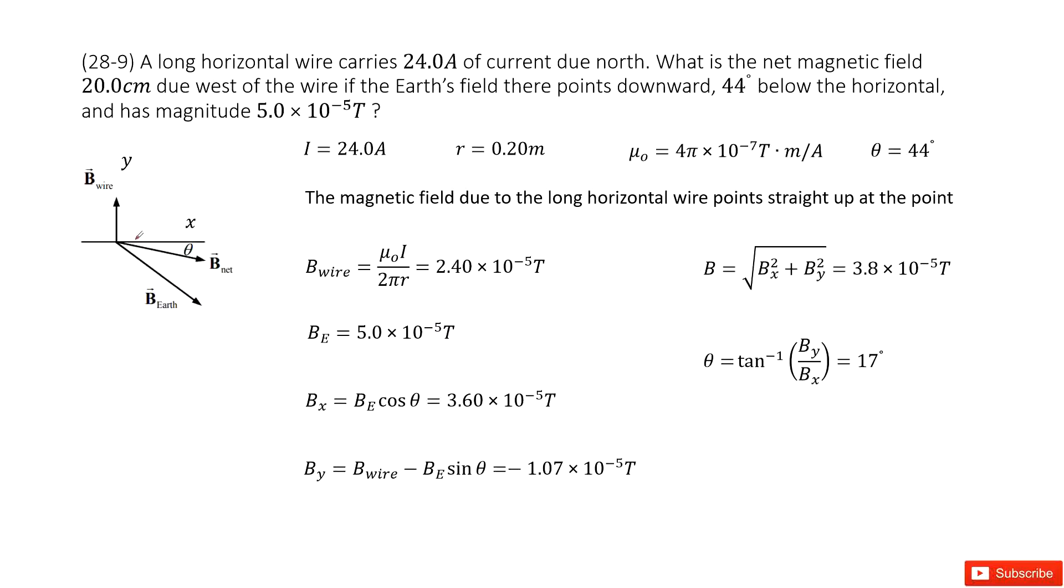For the horizontal wire, if you use your right hand and apply the right-hand rule, you'll find the magnetic field for this wire is pointing up. Let's say it's the y direction.